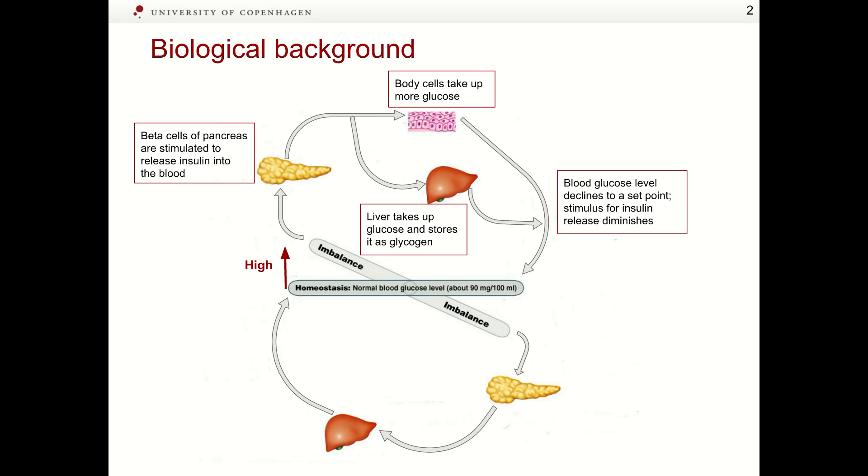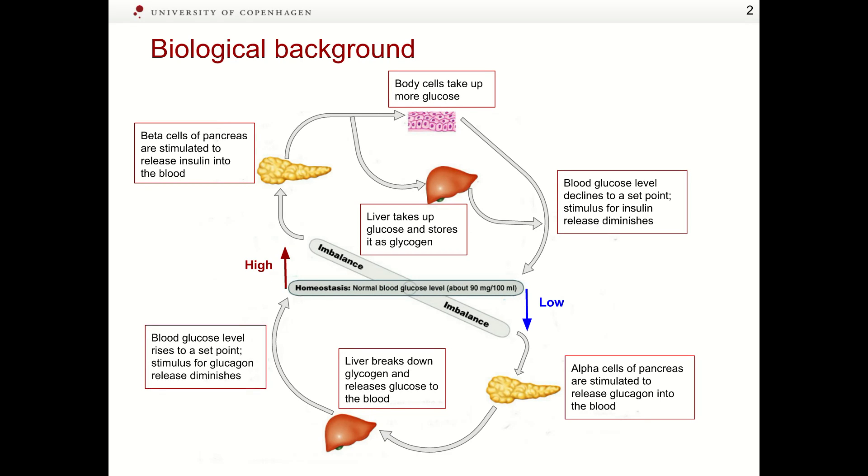When blood glucose level falls, alpha cells of pancreas are stimulated to release glucagon into the blood. Glucagon causes the liver to break down glycogen and release glucose into the blood. As a result, blood glucose level rises to a set point, stimulus for glucagon release diminishes, and body returns to homeostasis.